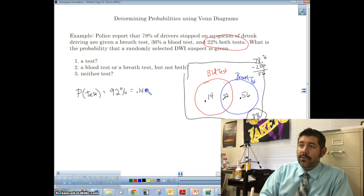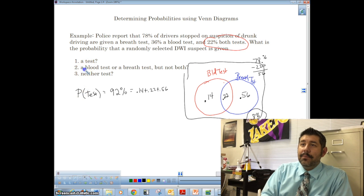All right? So I'm just going to write that out. 0.14 plus 0.22 plus 0.56. Now what's the probability that they get a blood test, or a breath test, but not both?